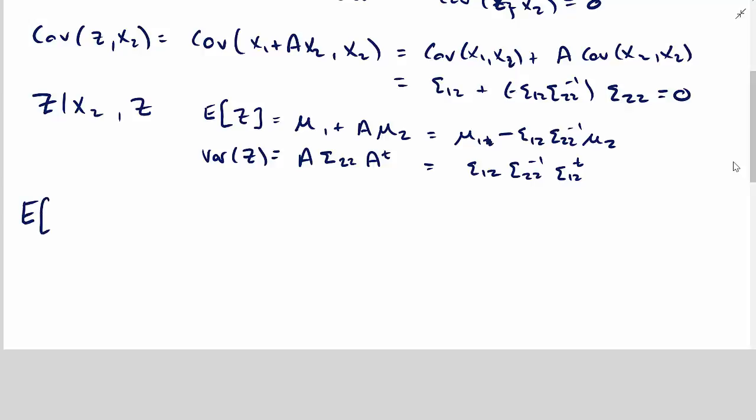So let's think about this. So the expected value of z given x2 is equal to little x2 is equal to the expected value of z, but it's also equal to mu 1 minus sigma 1 2, sigma 2 2 inverse mu 2. So we have that much so far.